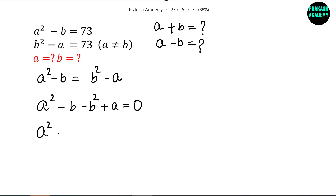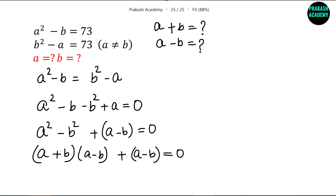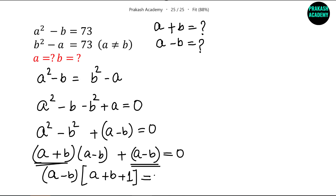This means we can write A² minus B² plus A minus B equals 0. Now we use the identity A² minus B² equals (A+B)(A-B). So this becomes (A+B)(A-B) plus (A-B) equals 0. We can then take (A-B) as a common factor, giving us (A-B)(A+B+1) equals 0.